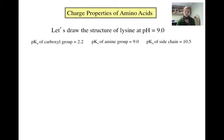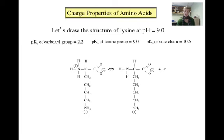Let's draw the structure of lysine at a pH of 9.0. The pKa of the carboxyl group is 2.2, the pKa of the amine group is 9.0, and the pKa of the R group is 10.5. The carboxyl group will be deprotonated as the pH is higher than its pKa, and the R group will be protonated as the pH is lower than its pKa. But the amine group has a pKa equal to the pH of 9.0, so half of the lysine molecules will have protonated amine groups and half will have deprotonated amine groups. The half with protonated amine groups has a charge of plus 1, and the half with deprotonated amine groups has a charge of 0. Therefore, the average net charge of lysine at a pH of 9.0 is plus 0.5.